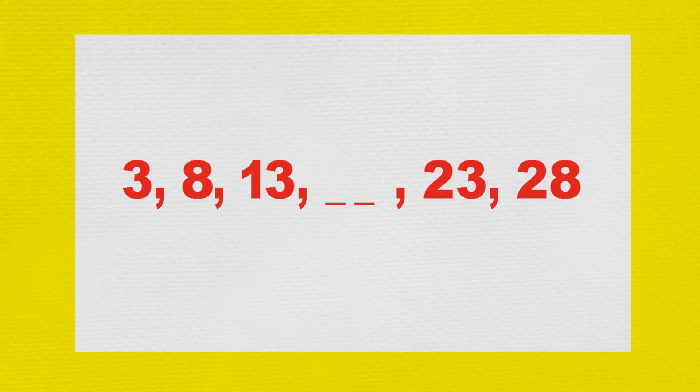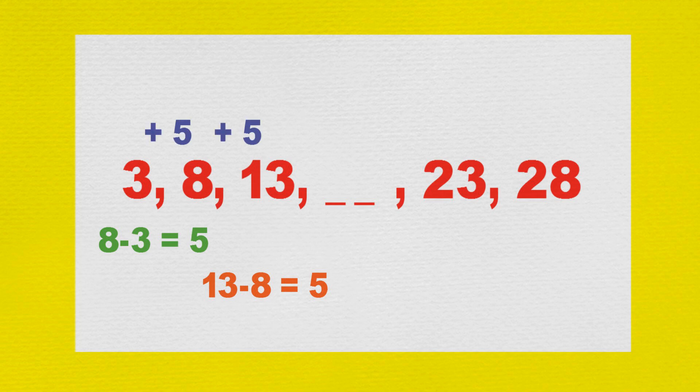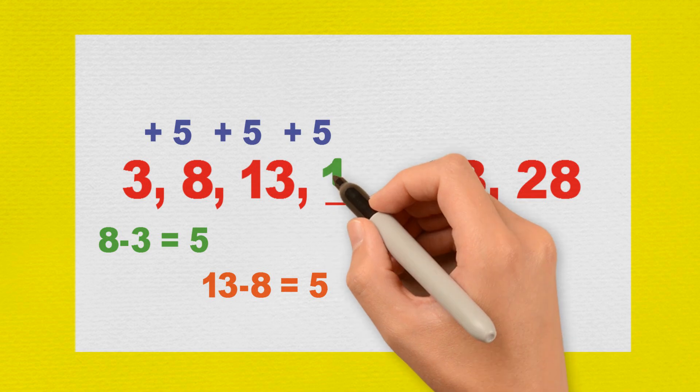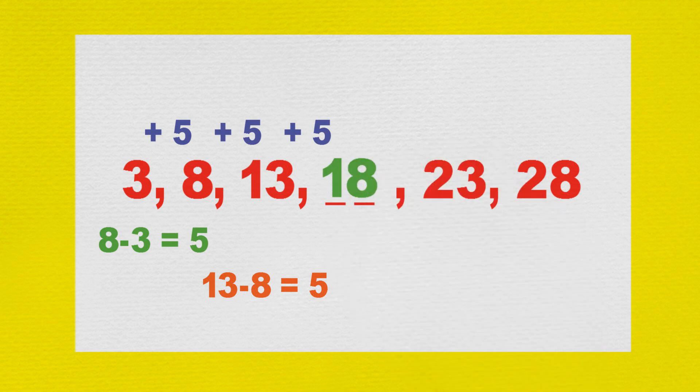Max looked at the numbers carefully and knew that eight minus three equals five and thirteen minus eight also equals five, so he could see that the pattern was to start at the number three and go up by fives. He told Matins this and added, and the missing number is eighteen, because thirteen plus five equals eighteen. You are a maths genius, Max. Correct again, said the excited alien.